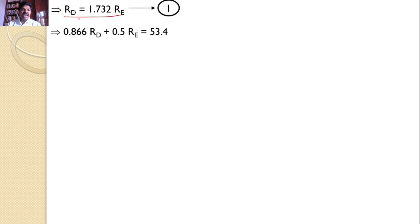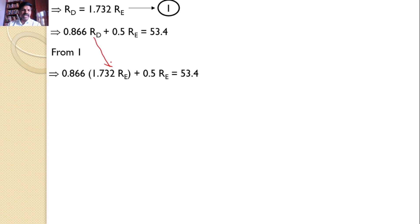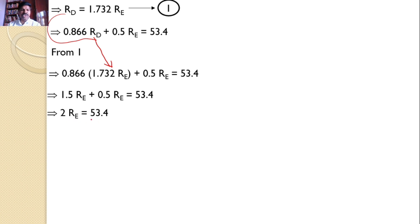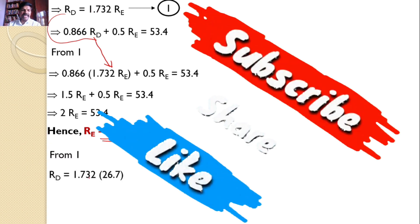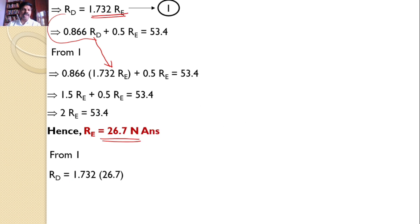From equation 1, RD = 1.732 RE. Substituting into the second equation: 0.866 × 1.732 RE + 0.5 RE = 53.4, which simplifies to 2 RE = 53.4, so RE = 26.7 Newtons. Substituting back into equation 1: RD = 1.732 × 26.7 = 46.25 Newtons. These two are the final answers for this problem.